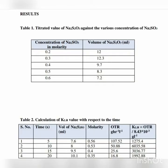Results - Table 1: titrated values of Na2S2O3 against various concentrations of Na2SO3. Concentration of Na2SO3 (M) versus volume of Na2S2O3 (mL): at 0.2 M → 12 mL; at 0.3 M → 12.3 mL; at 0.4 M → 9.7 mL; at 0.5 M → 8.3 mL; at 0.6 M → 7.2 mL.